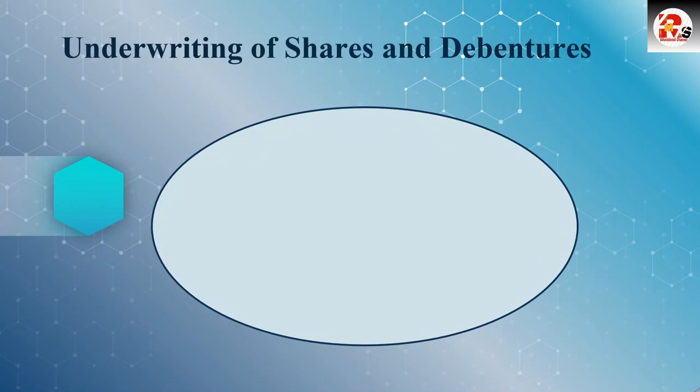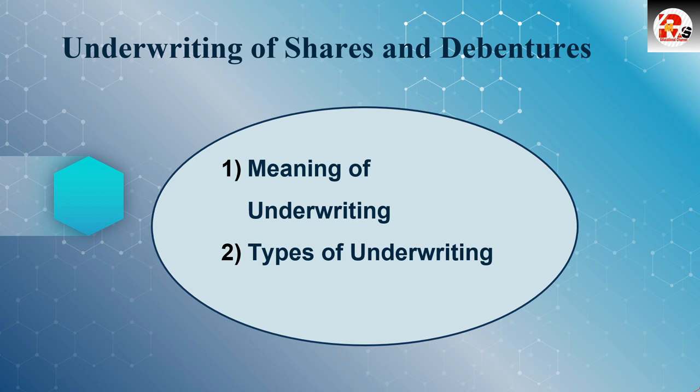The next topic is underwriting of shares and debentures — a very interesting and practical-based topic covering how shares are issued, what the minimum subscription should be, what SEBI's rules are, and what the role of underwriters is. We will study types of underwriting including firm underwriting. It is a small but scoring topic, though it is calculation-heavy. We will learn the meaning of underwriting, types of underwriting, and practical problems where underwriters A, B, C, D are named and you have to prepare the underwriters' statement.